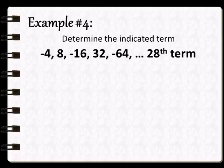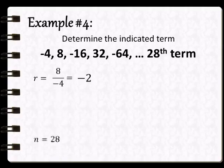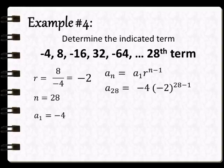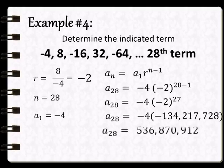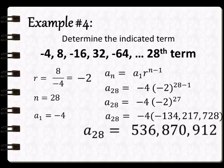Another example. Determine the indicated term on the geometric sequence negative 4, 8, negative 16, 32, negative 64, down to the 28th term. Ulitin lang natin yung process na ginawa kanina. So, a sub 28 equals to 536,870,912.